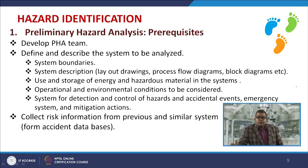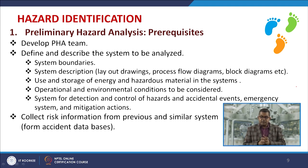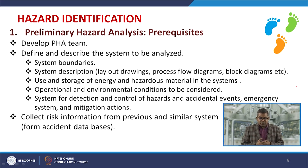The prerequisites in detail require first developing a PHA team that includes those very much aware of the process and its safety reviews. Then define and describe the system to be analysed including system boundaries, description, layout drawings, process flow diagrams, block diagrams, and flow sheets. Document use and storage of energy and hazardous materials with proper MSDS. Consider operational and environmental conditions. Establish systems for detection and control of hazards, emergency systems, and mitigation actions. Collect all risk information from previous and similar systems using accidental databases.